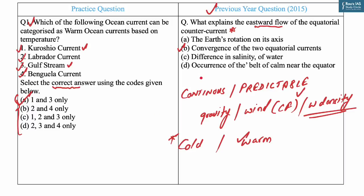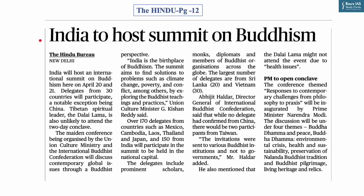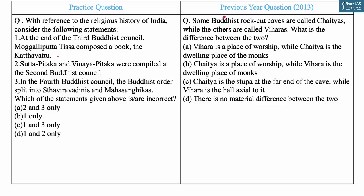The next question is based on news from page number 12 of The Hindu newspaper. India is going to host an international summit on Buddhism in New Delhi from April 20 to 21, with delegates from 30 countries. A notable exception is China, and the Dalai Lama is also unlikely to attend. Buddhism and Jainism have been a persistent theme in UPSC prelims. In 2013, UPSC asked about features of Chaityas and Viharas. Today's MCQ: with reference to the religious history of India, identify the incorrect statements.